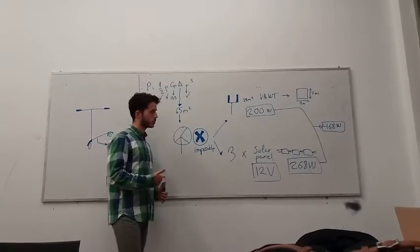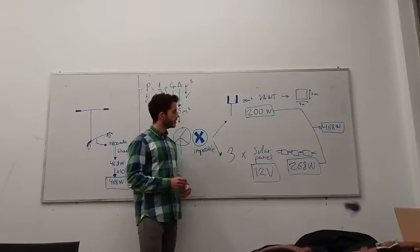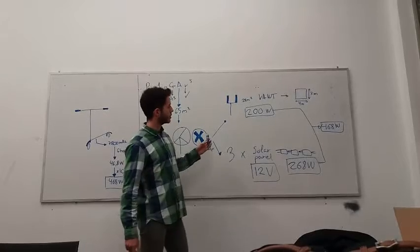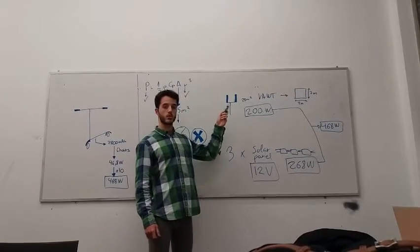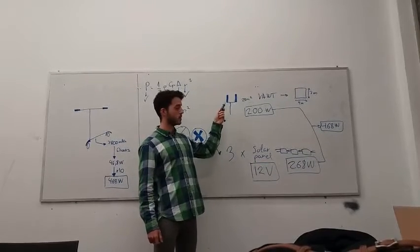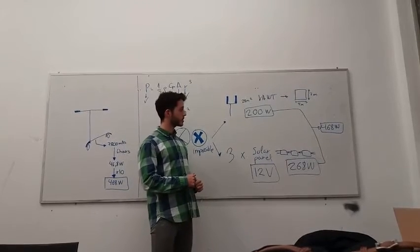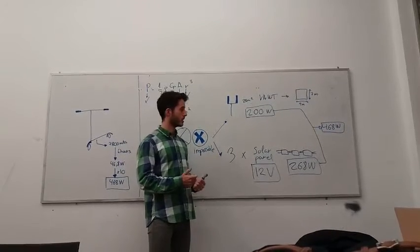That's why we propose an alternative: to install a vertical axis wind turbine with 28 square meters of swept area. This turbine would provide 200 watts.